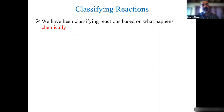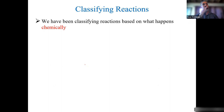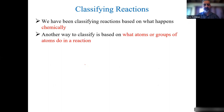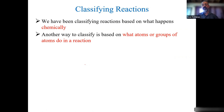Now that we know how to balance, we also want to classify reactions. We're by no means done balancing — this whole lecture will have balancing in it. But we also want to be able to say, okay, this is the type of reaction this is, because down the line we'll have to predict products — just given reactants, you'll have to predict products. A way to identify the type of reaction is by looking at the groups of atoms.